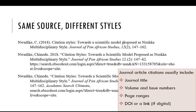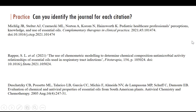Using the link is the easiest way to find an article online, but if the article isn't freely available, the publisher's website will ask you to pay. Never pay for an article — that's what the library is for. Let's practice. There are three different articles cited in three different citation styles below. Can you identify the journal title for each citation?